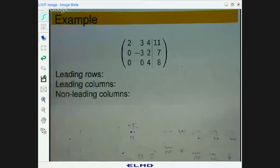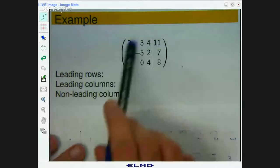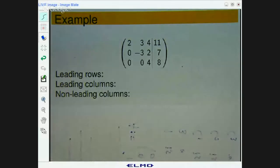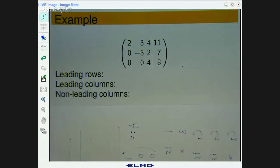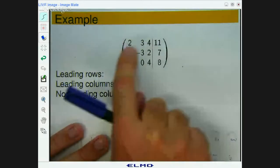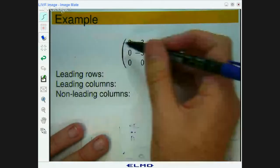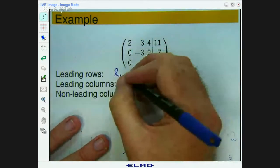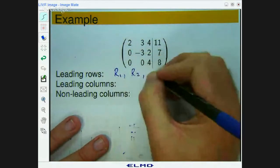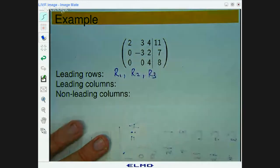Ok. Here we have an augmented matrix. Let's identify the leading rows, leading columns and the non-leading columns. Ok. So, the leading rows. Let's start with R1. That's non-zero. That's non-zero. That's non-zero. So they are all leading rows, because none of them are completely made up of zeros. Ok.